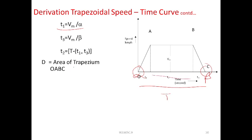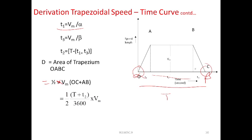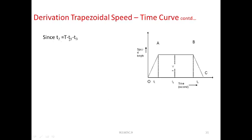The distance D is taken as the area of the trapezoid. The area is calculated as one-half times Vm times (OC plus AB), which simplifies to one-half times Vm times (T plus T2), divided by 3600 to convert from seconds to hours, since T1 and T3 are in seconds and speed is in km/h.